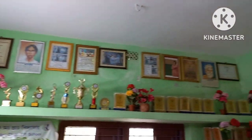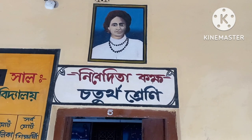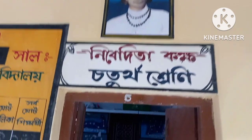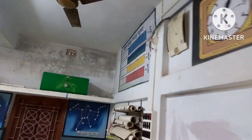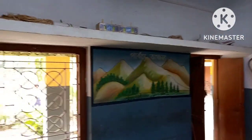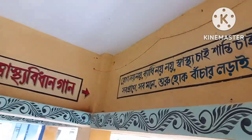We can see photo frames of great personalities who are an inspiration to all of mankind. Right after the office room is Nivedita Kaksha, which is for Class 4. The room is also nicely decorated, and in the passage the Swasthyavidhan — health guidelines — are also inscribed on the wall.